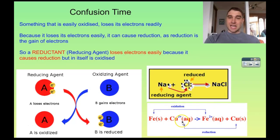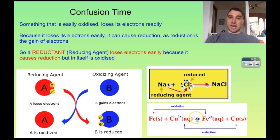Because iron is losing its electrons, the copper is being reduced. So iron is a reducing agent — it is causing the reduction of the copper ions. Therefore, iron is a reductant.